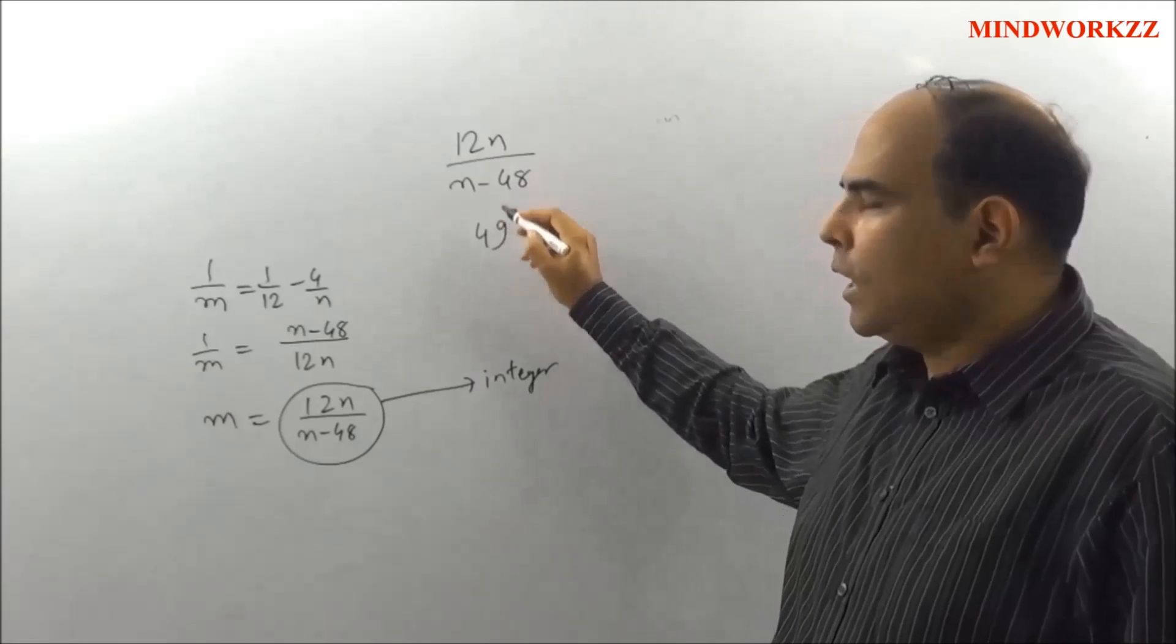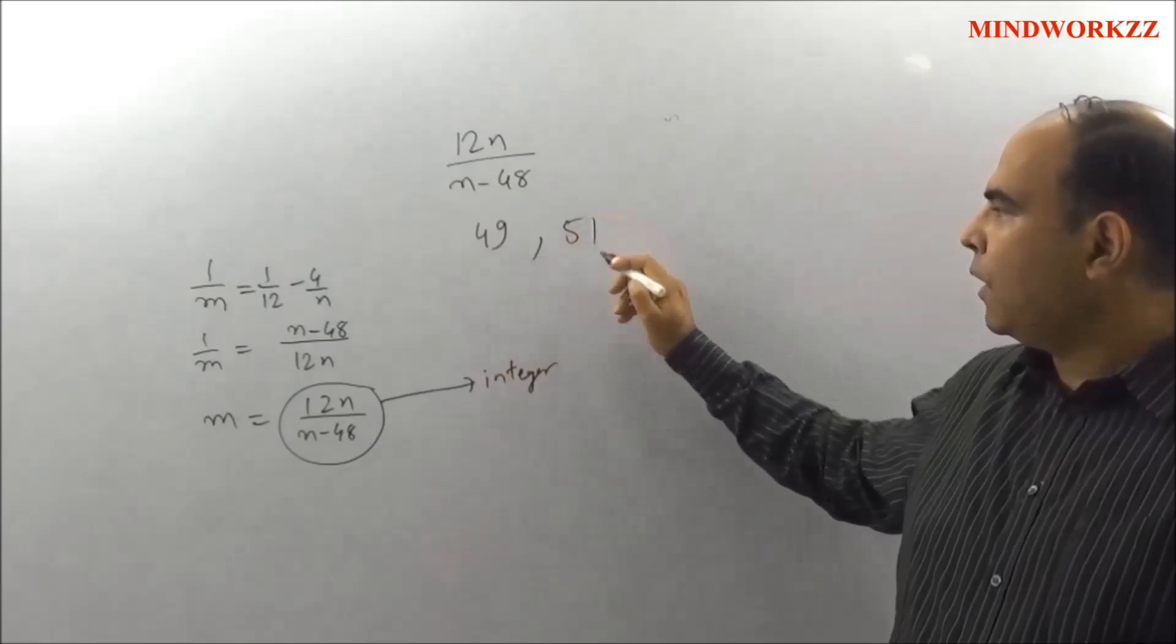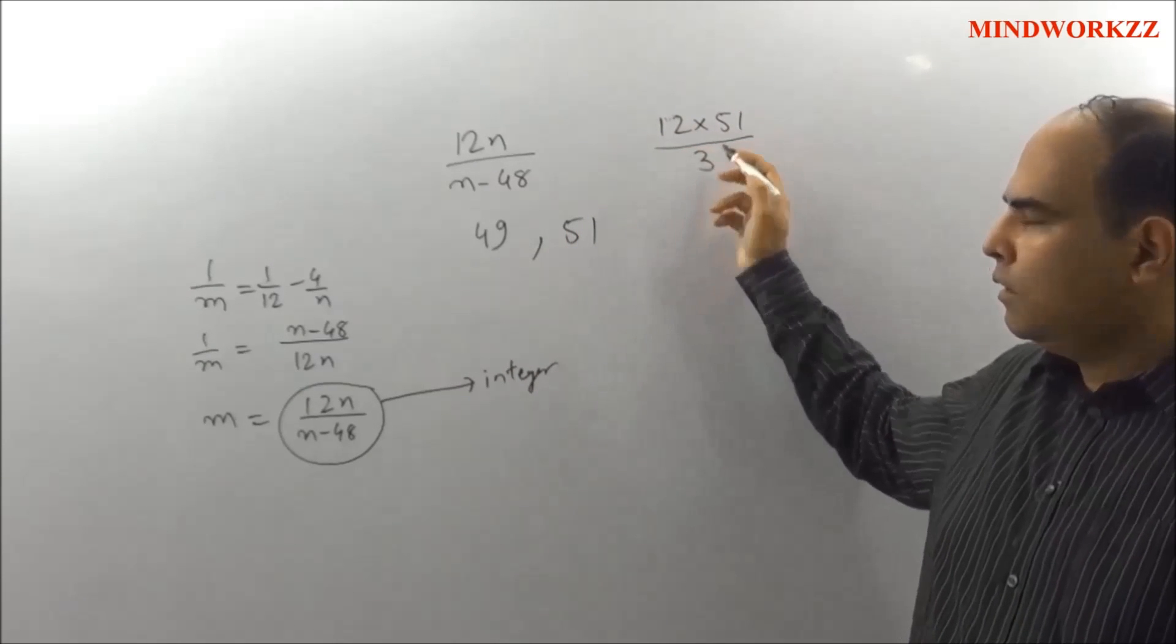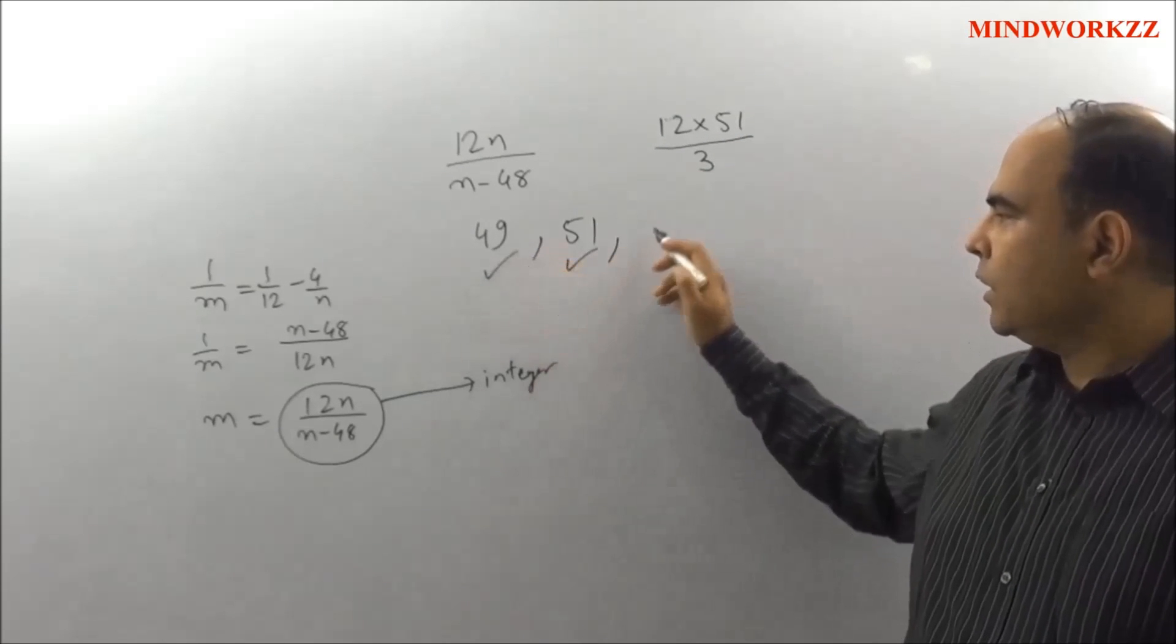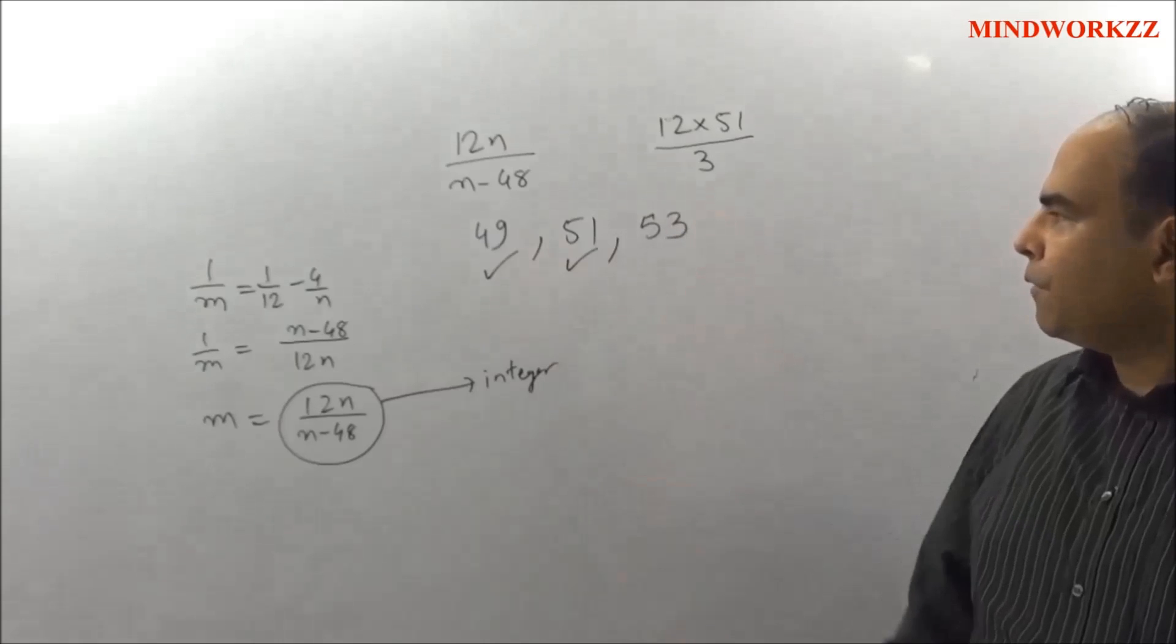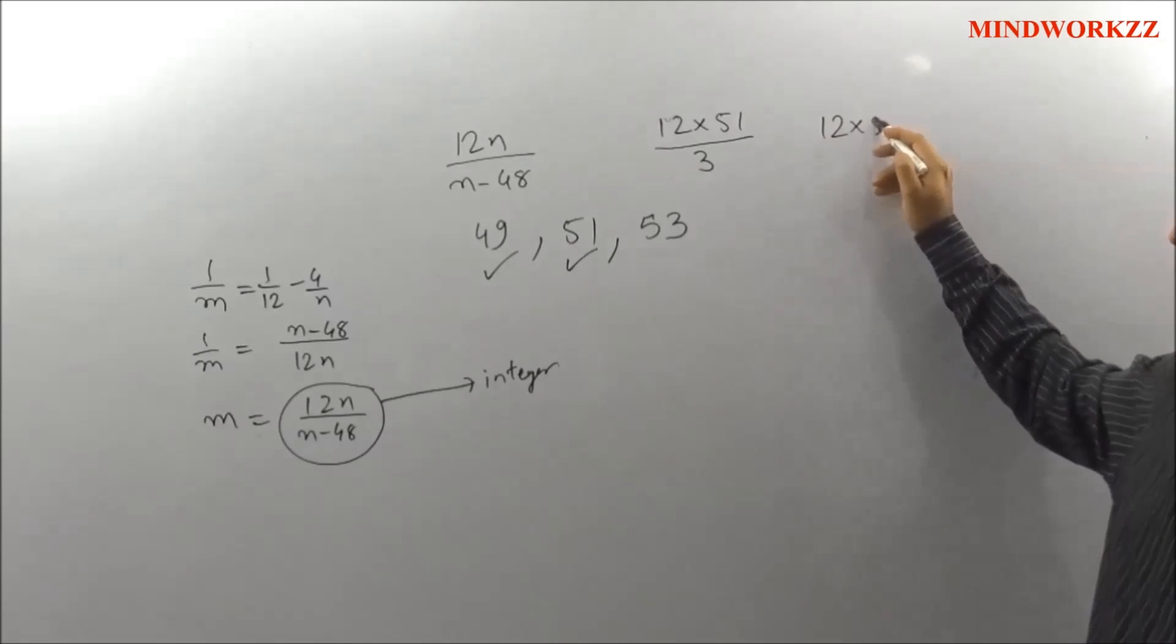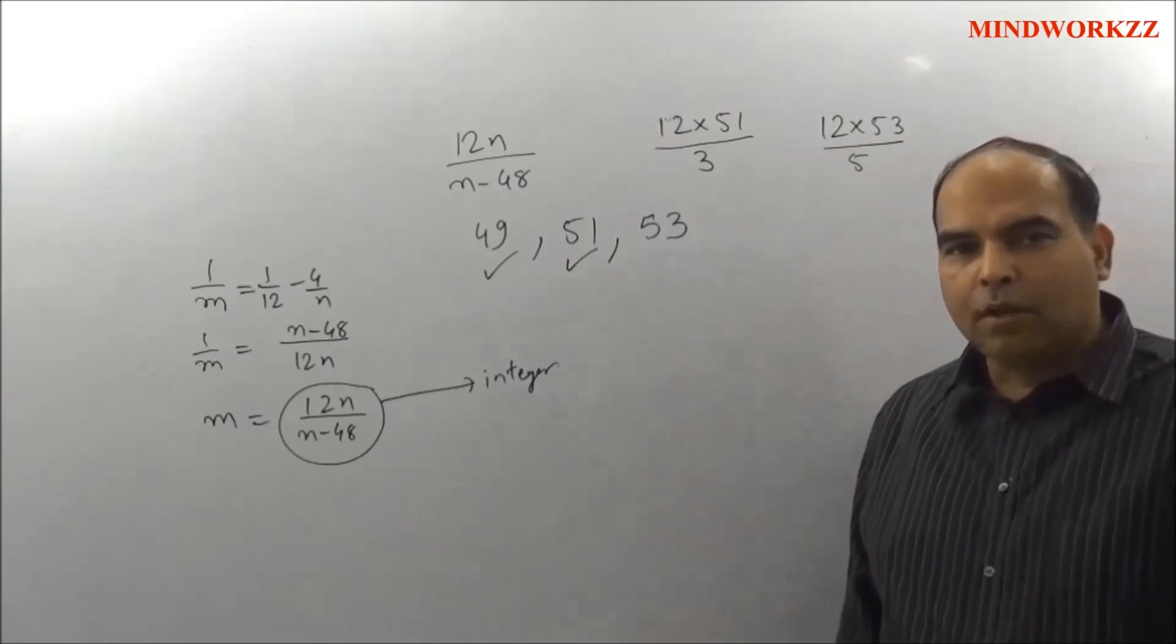It's quite clear that if you put n as 49, that will happen. If you put n as 51, you will get an expression of 12 × 51 / 3, which will also be an integer. But if you put 53 here, the solution ends up with 12 × 53 / 5, where it's quite clear that the 5 does not cancel out in the numerator or the denominator, and hence 53 is not a solution for the value of n.